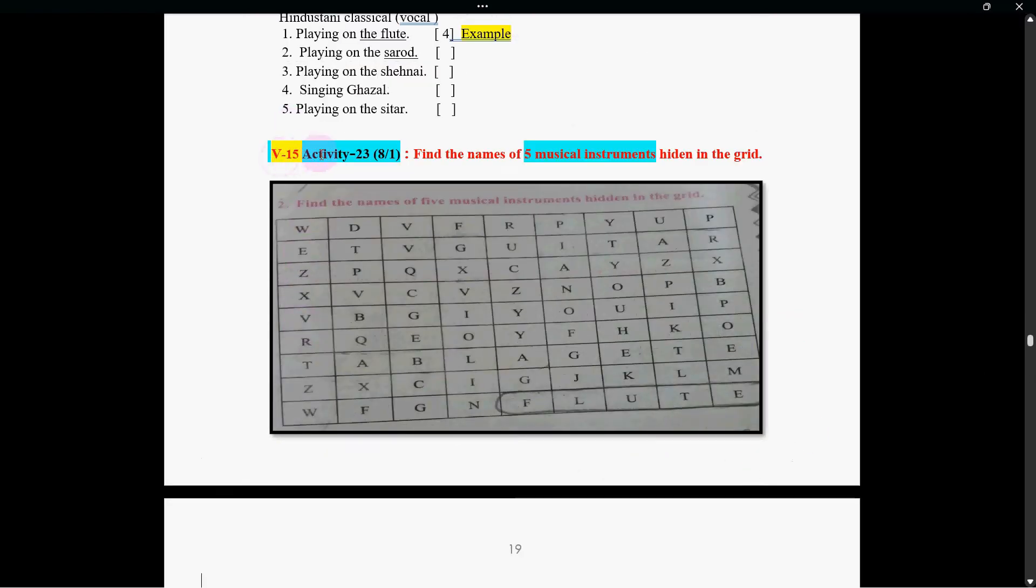Now, after five minutes, do activity number 23. In this, it is saying find the names of five musical instruments hidden in the grid. Here, this grid is given. In this grid, there are names of musical instruments. For example, one is here, flute. In the same way, you can find others and mark them. For example, suppose guitar. So find and do this. Do this activity in five minutes.